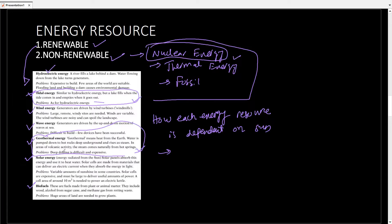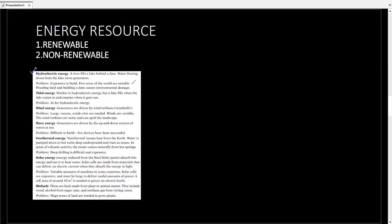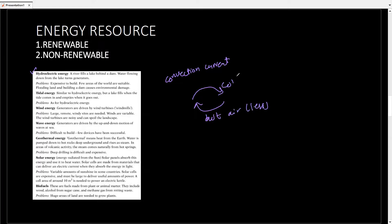All other energies we use depend on the sun. Hydroelectric energy depends on the water cycle, and the water cycle depends on the sun — when it rains, we store water in a dam and use it later. Wind energy is created due to convection currents, defined as the movement of hot and cold air particles. Hot air particles move upward because they become less dense, and cold air particles take their place. This movement is called convection current, which is dependent on the sun.